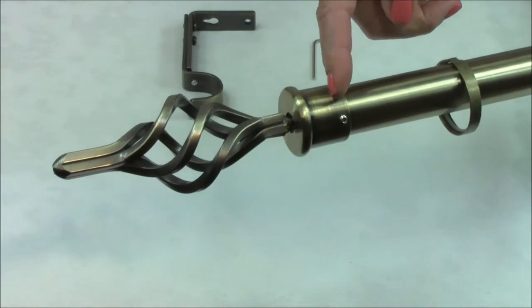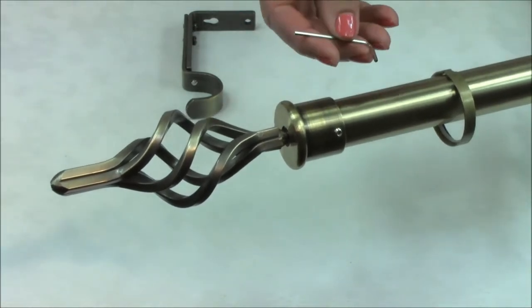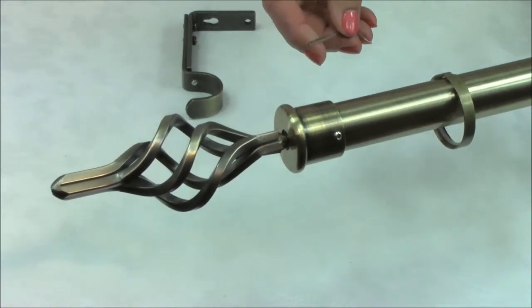The finial is attached to the pole with a grub screw and adjusted using an allen key that is included with the pole.